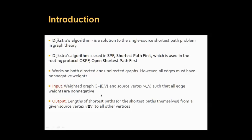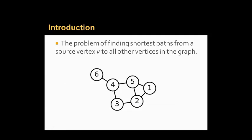The output is the lengths of the shortest paths, or the shortest paths themselves, from a given source vertex to all other vertices. Given the problem of finding the shortest path from a source vertex to all other vertices in the graph, the nodes are 1, 2, 3, 4, 5, 6, and 8.